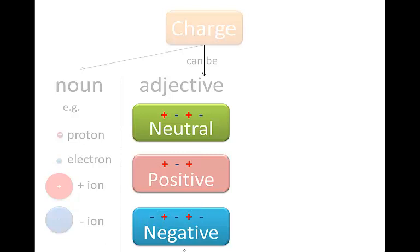So we can say a ruler is neutral, or it is positively charged, or it is negative. That describes the ruler. It's an adjective.